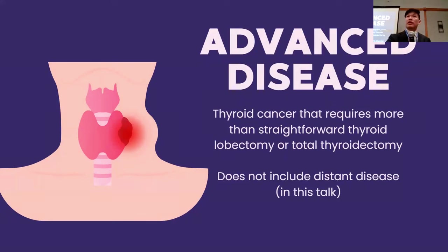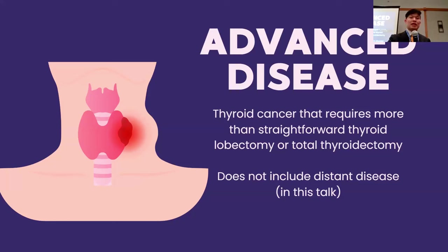For this talk, what do I mean by advanced disease? I think there are a lot of ways to define it. In this talk, I'm not so much talking about distant spread or metastasis to other organs. This is talking about disease that ends up requiring more than a straightforward thyroid lobectomy or total thyroidectomy.